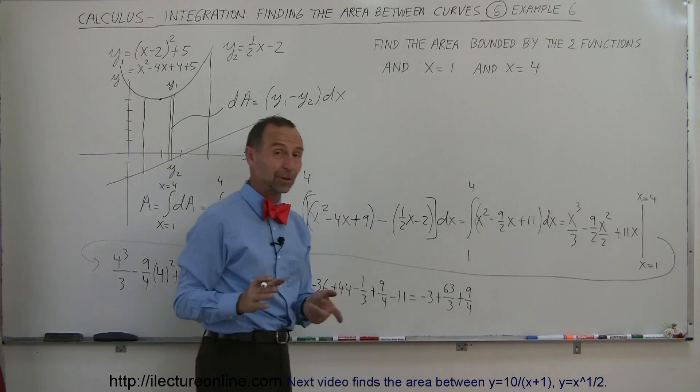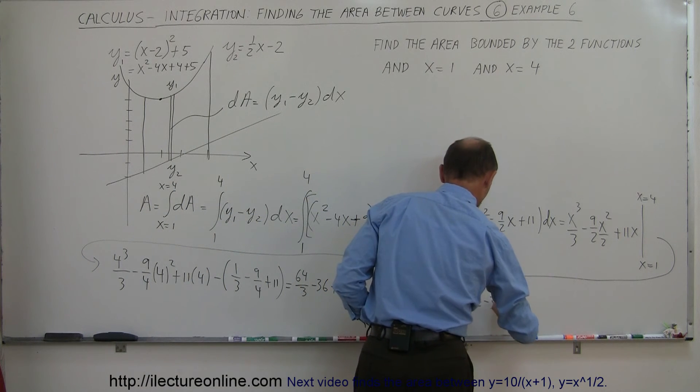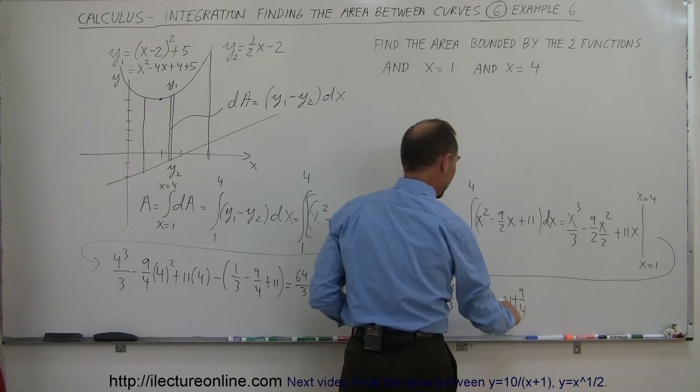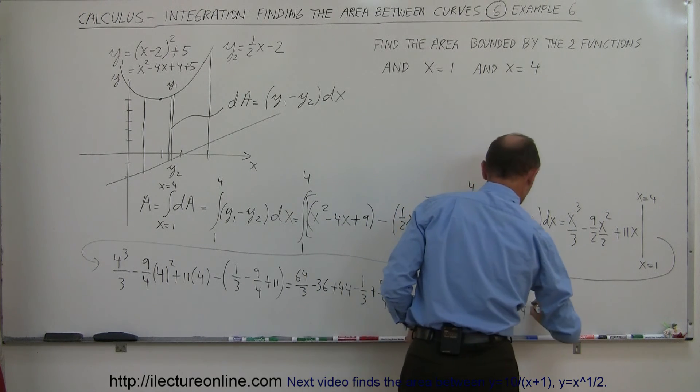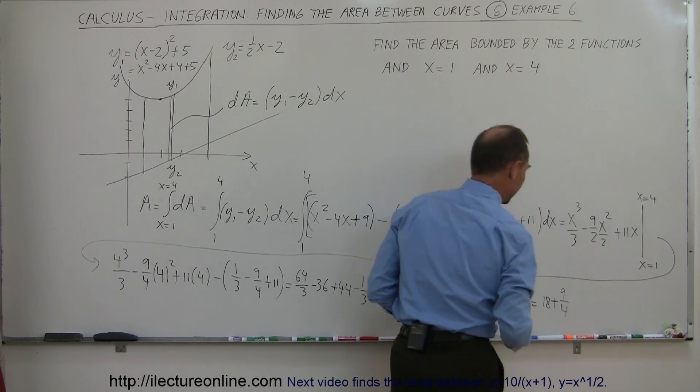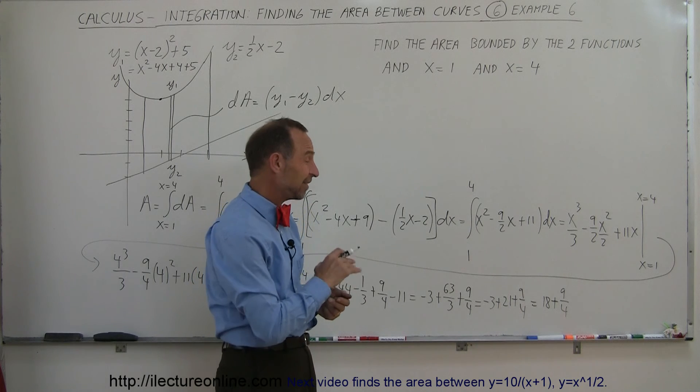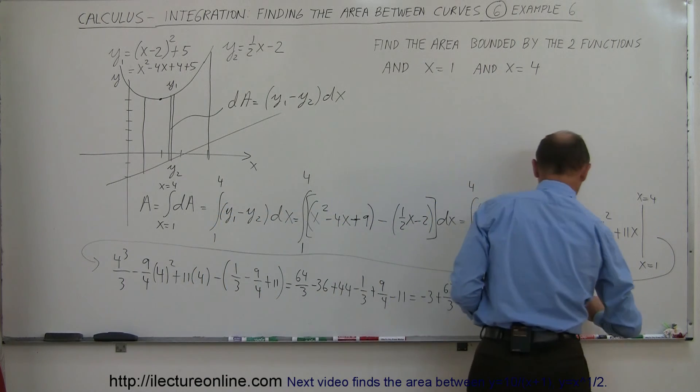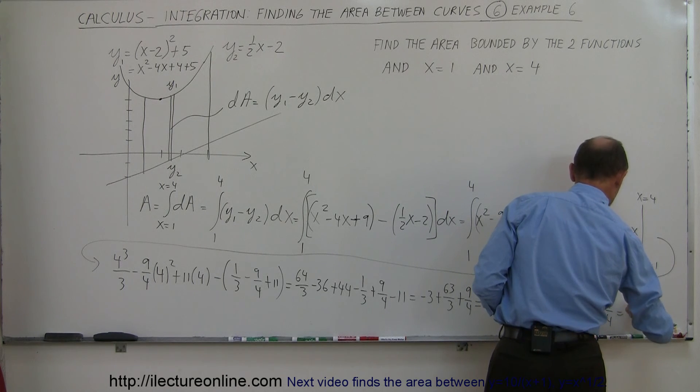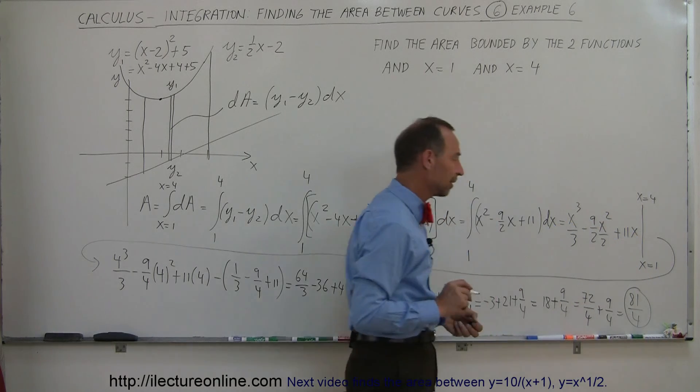But 63 thirds of course is 21, so that becomes minus 3 plus 21 plus 9 fourths. 3 subtracted from 21 is 18, so this is equal to 18 plus 9 over 4. Putting everything over the same denominator, 18 is the same as 72 over 4, so this is equal to 72 over 4 plus 9 over 4, which is equal to 81 over 4. And that then becomes the final area.